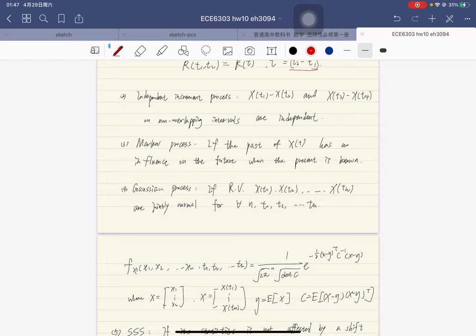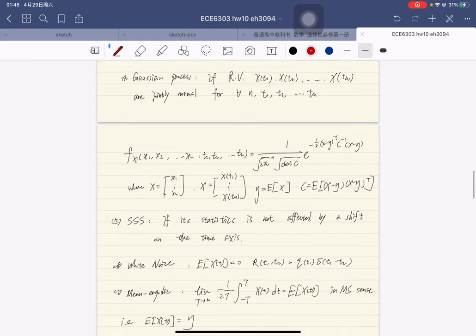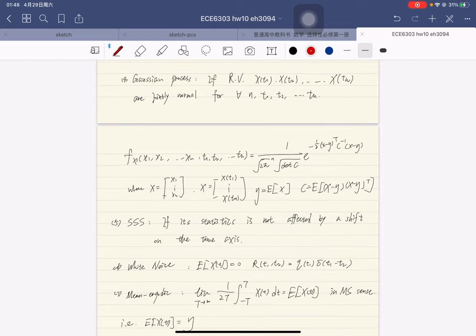The other is Gaussian process. A process X(t) is said to be normal if the random variables X(T1), X(T2) to X(Tn) are jointly normal for any n and any T1, T2 to Tn. That is, the joint density function is shown as follows.